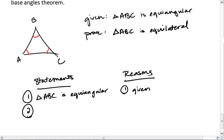Then, since angle A and angle C are congruent, then sides AB and BC are congruent. And that's the converse to the base angles theorem.